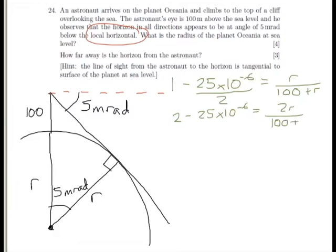Now, let's start rearranging this, so 2 minus 25 times 10 to the minus 6, multiplied by 100 plus r, equals 2r.